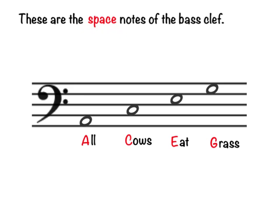These are the space notes of the bass clef — the notes in between the lines. First space is A; we use the word 'all' to help us remember it. Second space is C — 'cows.' Third space is E — 'eat.' Fourth space is G — 'grass.' All Cows Eat Grass. A, C, E, G.